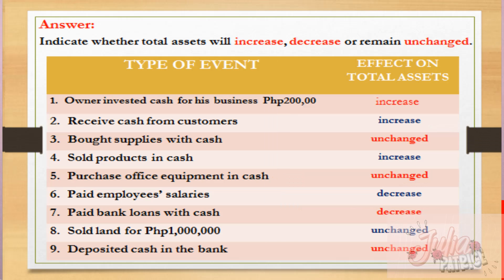Now let's check your answers — indicate whether total assets will increase, decrease, or remain unchanged. Number one: owner invested cash for his business, 200,000 pesos — effect on total assets is increased, because cash was added to the business. Number two: received cash from customers — cash increased again, because the customer paid for the service rendered by the business, so assets increase.